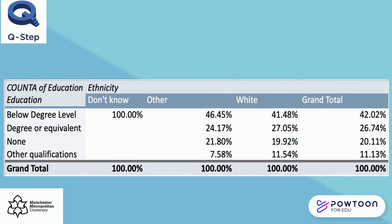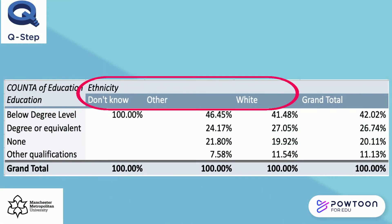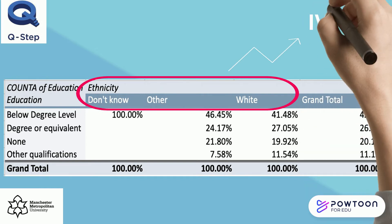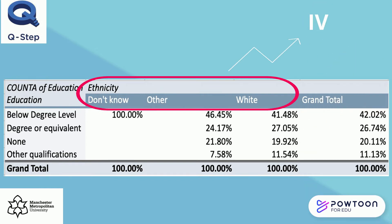Here we can see an example of a crosstab. Circled in red is the independent variable with categories: don't know, other, and white. Circled in blue on the left is education, which is our dependent variable, and we have the categories below degree level, degree or equivalent, non, and other qualifications.